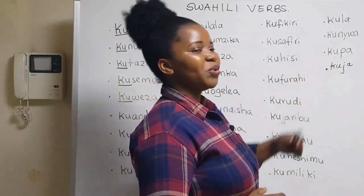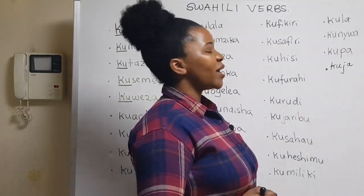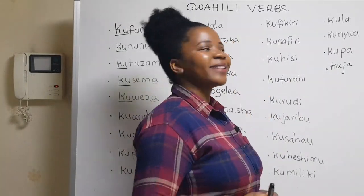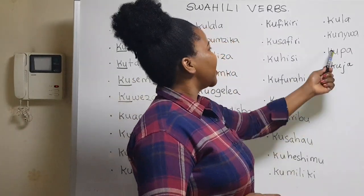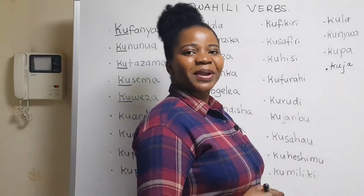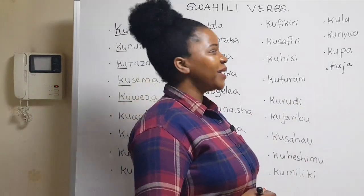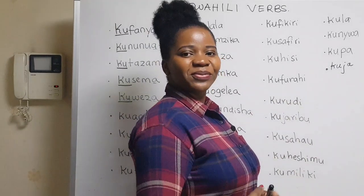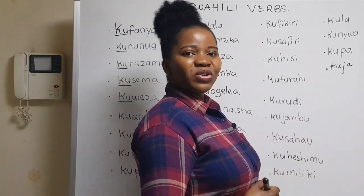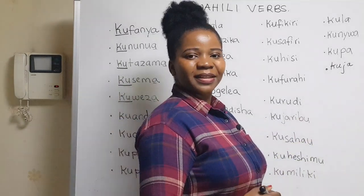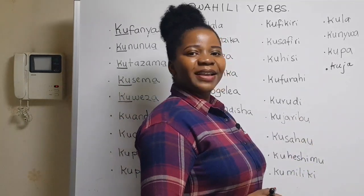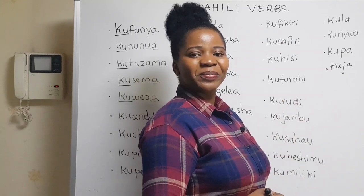'Kunywa' is 'to drink.' 'Kupa' is 'to give.' 'Kuja' is 'to come.'